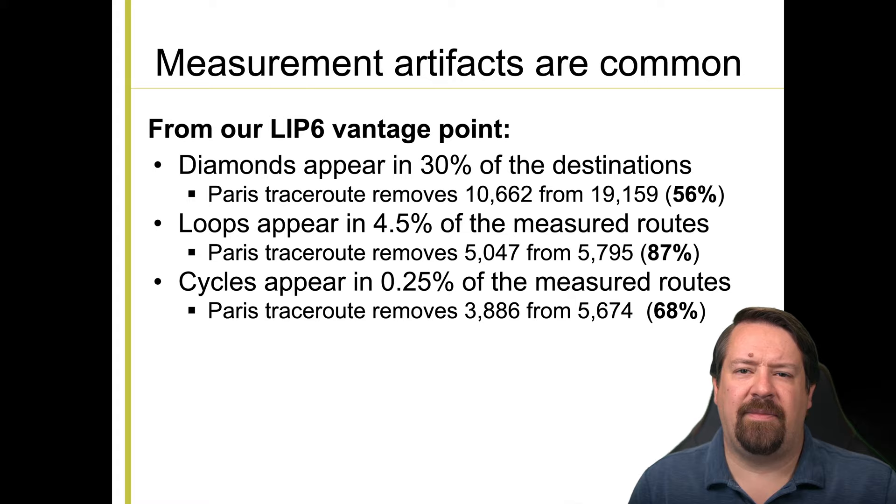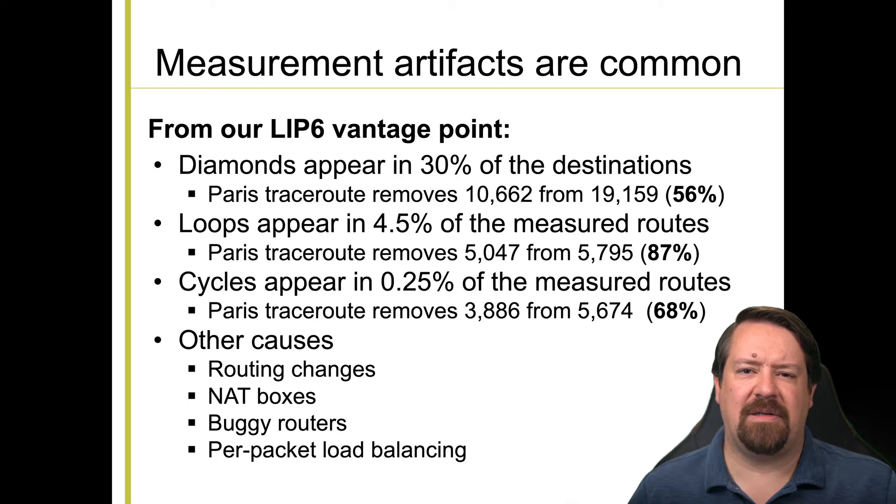The things that Paris tracerout can't address include real routing changes, which can result in temporary routing loops and cycles, NAT boxes, which cause tracerout to infer incorrect results, and routers with bugs in their code, or the case of per packet load balancing.